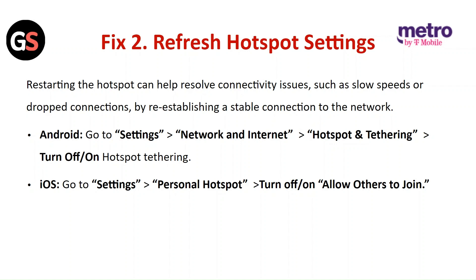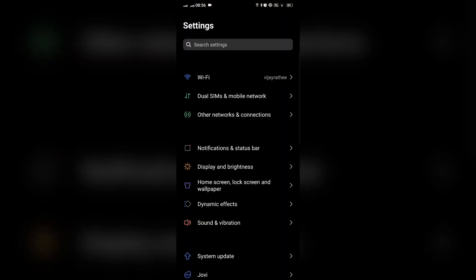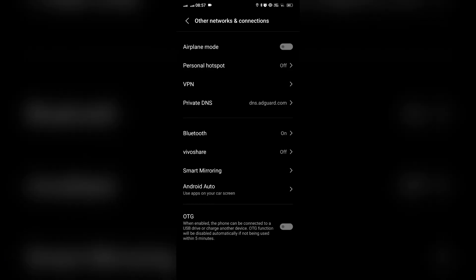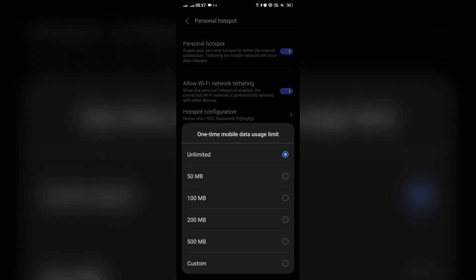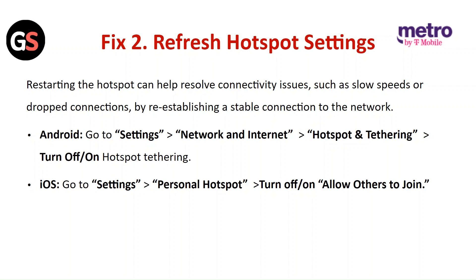Restarting the hotspot can help resolve connectivity issues such as low speed or dropped connection by re-establishing a stable connection to the network. For Android, go to Settings, then Network and Internet, then Hotspot and Tethering. Turn off and on the hotspot tethering. For iOS, go to Settings, then Personal Hotspot, turn off and on, allow others to join.